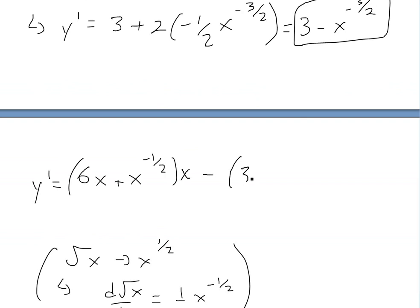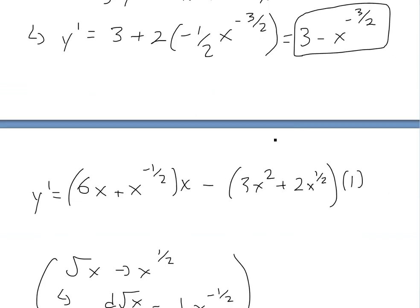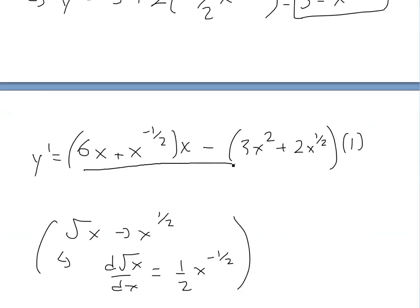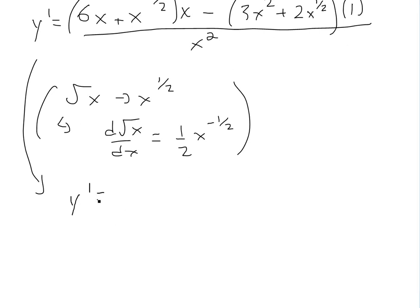Then we subtract the top — which is 3x squared plus 2x to the one-half — times the derivative of the bottom. The derivative of x is just 1. All of this is divided by the bottom squared, which is x squared. Now we multiply x through the first bracket to get 6x squared plus x to the one-half, and you can see how complicated this is getting.